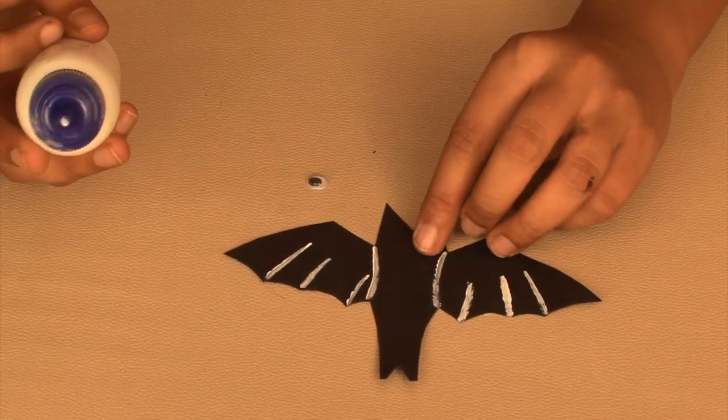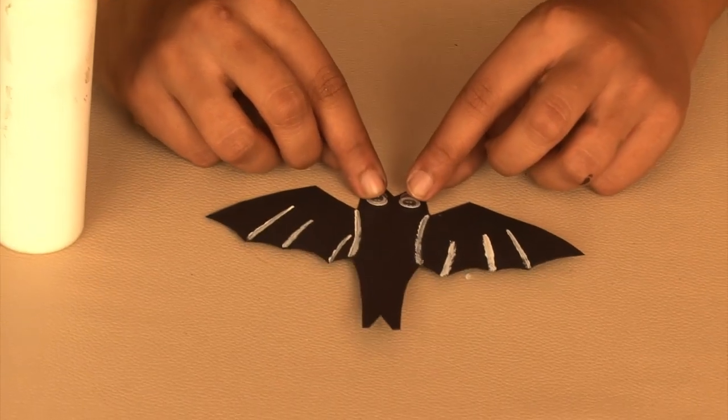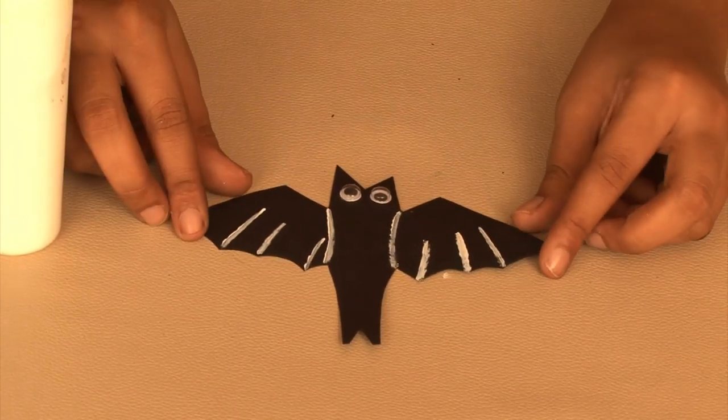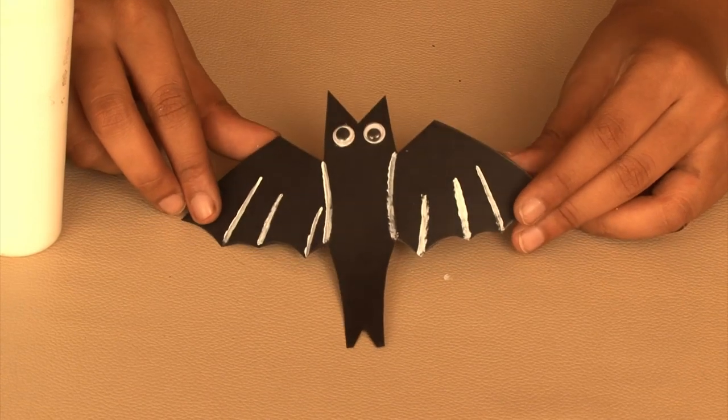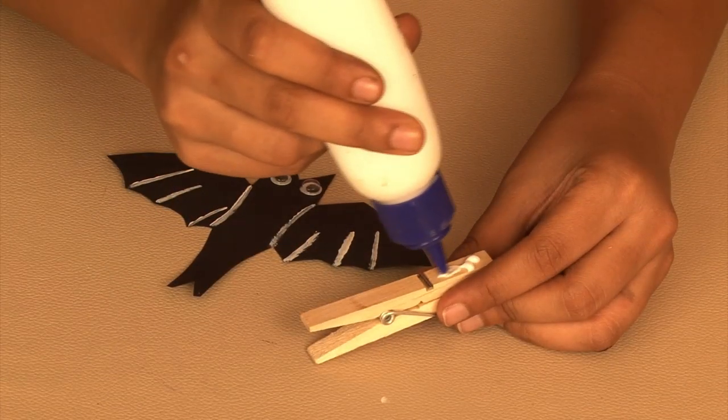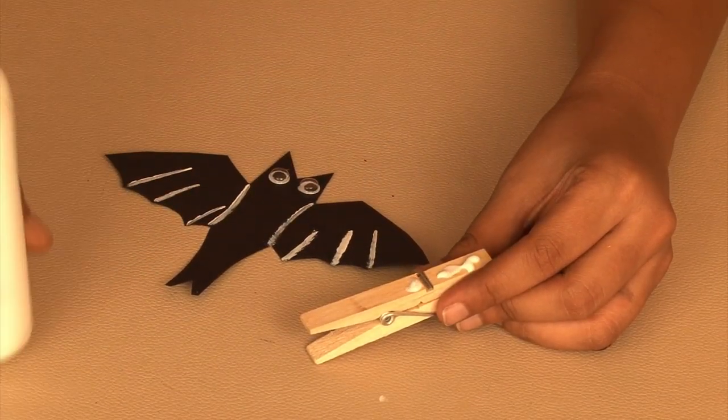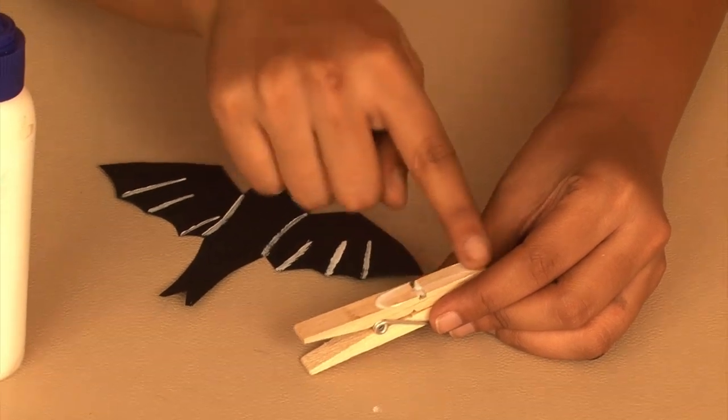Now to stick the googly eyes. Finally, take a wooden clothes peg, spread some glue on the side and press the paper bat down firmly.